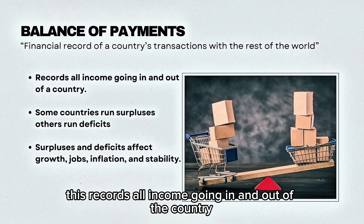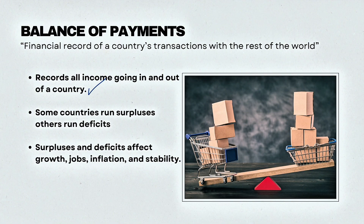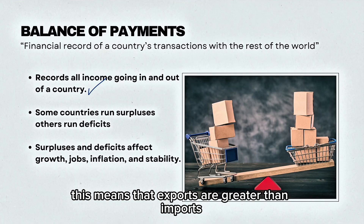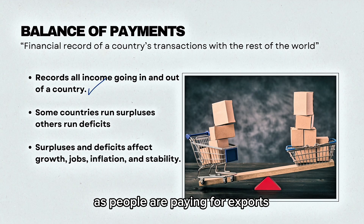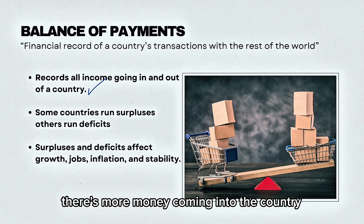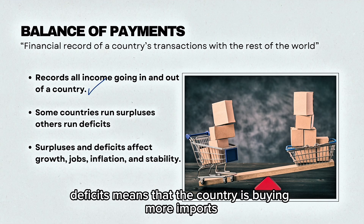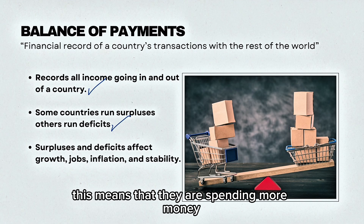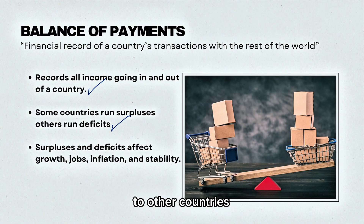This records all income going in and out of the country. Some countries will run surpluses, which means that exports are greater than imports. As people are paying for exports, there's more money coming into the country. On the other hand, deficits mean that the country is buying more imports than it is exporting, so they are spending more money to other countries.